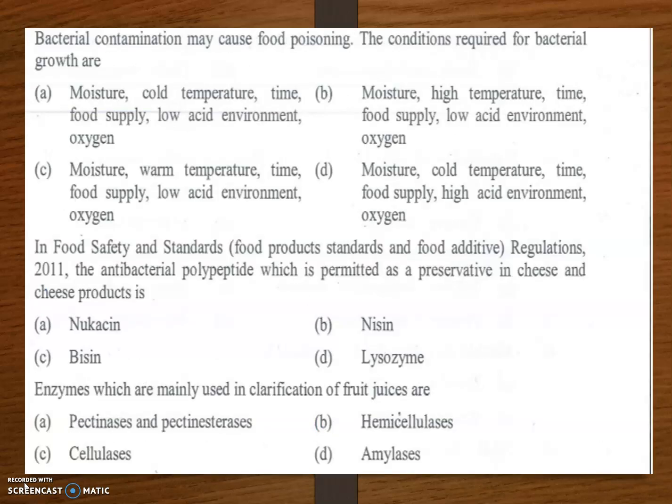Bacterial contamination may cause food poisoning. The conditions required for bacterial growth are — the answer is option C: moisture, warm temperature, time, food supply, low acid environment, and oxygen. These are all the conditions required for bacterial growth.